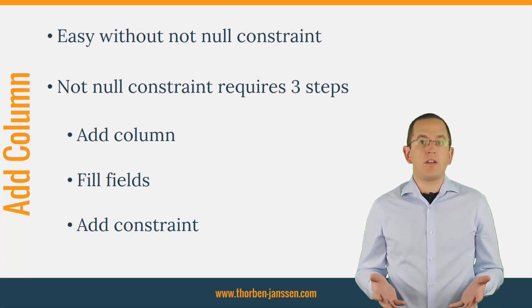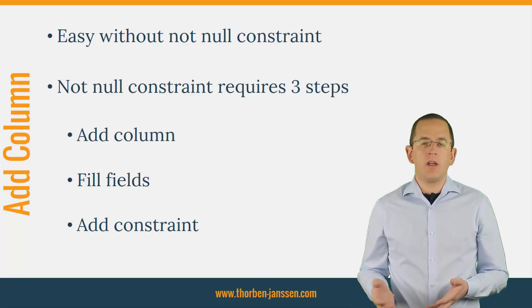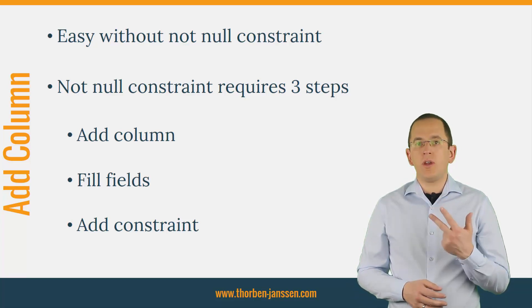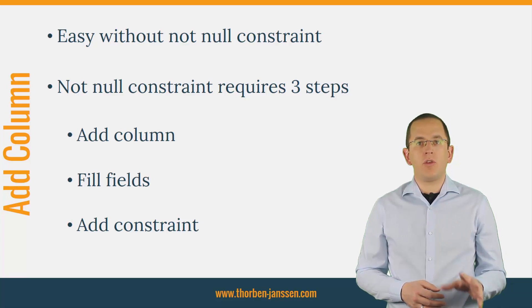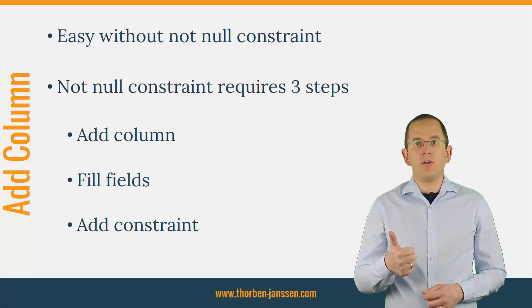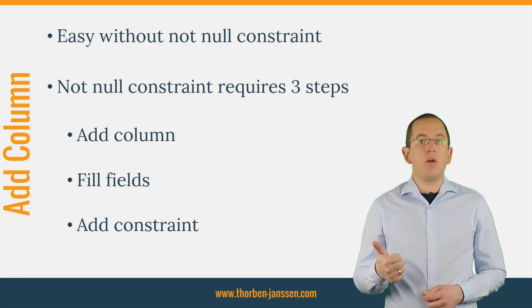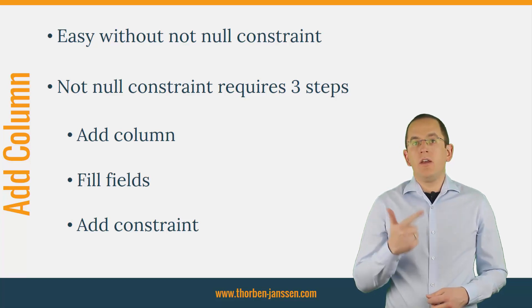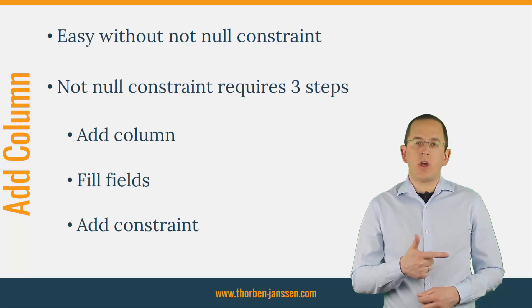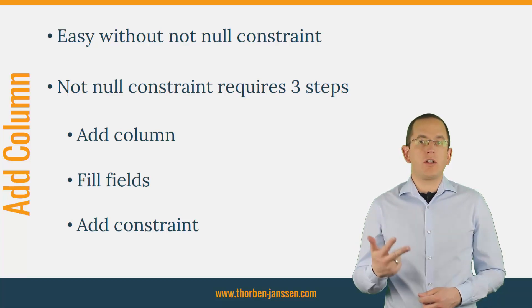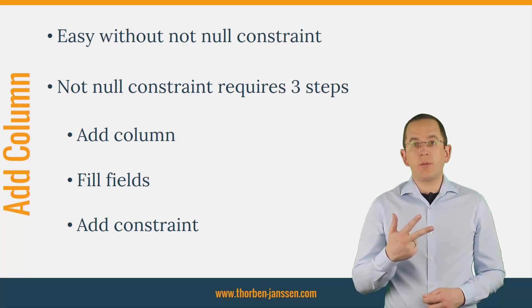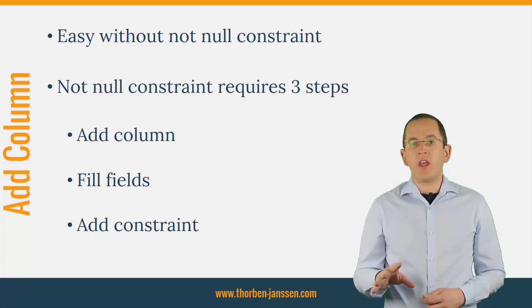You can easily fix that by providing a default value. Please check your database documentation on how to do that. If you don't want to define a default value, you need to execute 3 statements to add the column with the constraint. First, add the column without a default value and update all application instances. Second, run a database script to fill that field in all existing records. And third, add the NOT NULL constraint. The good news is that you can execute all 3 statements within the same migration step.